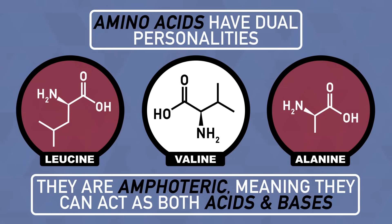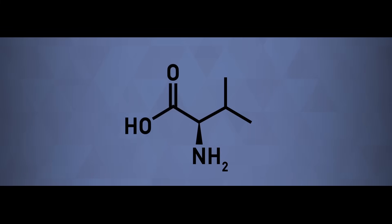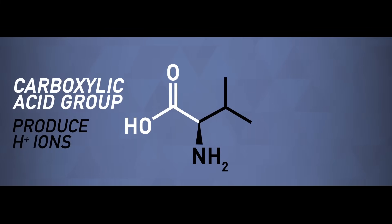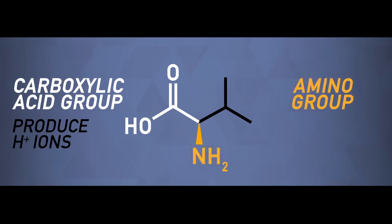They are said to be amphoteric, which means that they can act as both acids and bases. An amino acid has a carboxylic acid group that can produce hydrogen ions, and an amino group that can accept hydrogen ions.